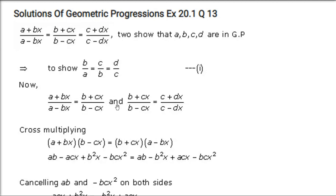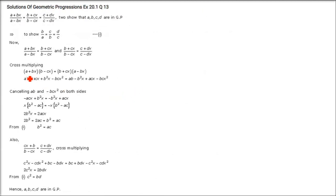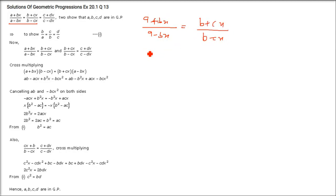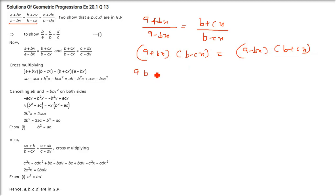Take the first two expressions and cross-multiply: (A + BX)(B − CX) = (B + CX)(A − BX). Expanding the left side: AB − ACX + B²X − BCX².